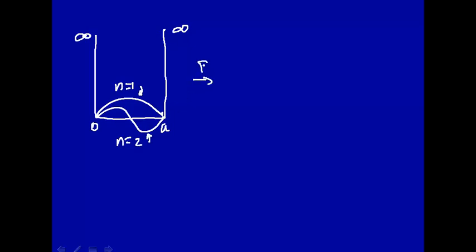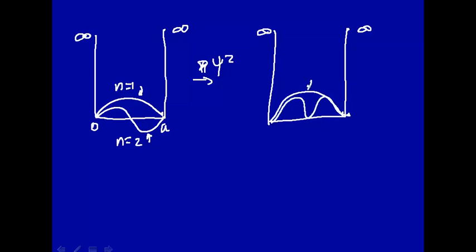Let's look at the probability density, in other words the square of the wave function. If we square the n equals 1, we'll get something like this. If we square n equals 2, this will become positive, so we'll get something like this. This is the probability distribution for low values of the quantum number, n equals 1 and n equals 2.